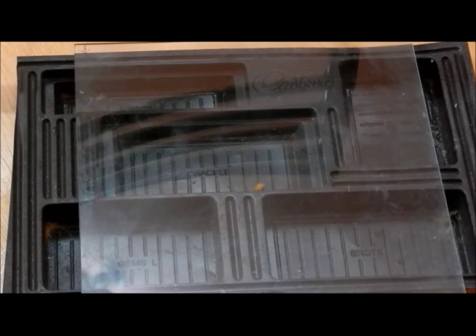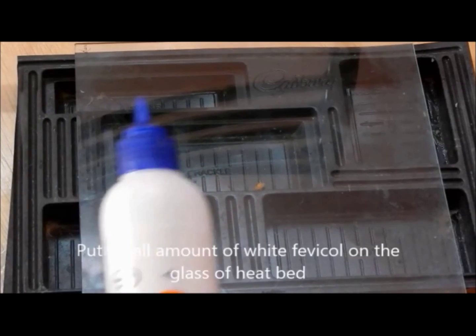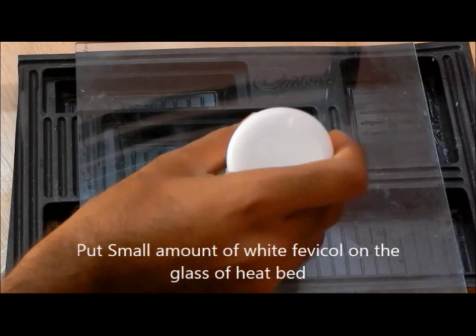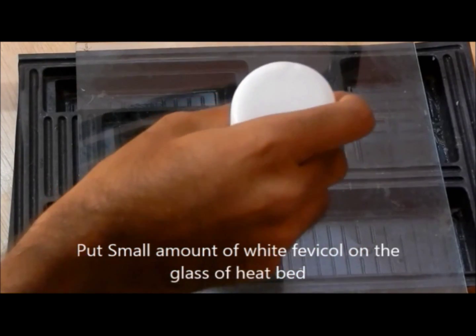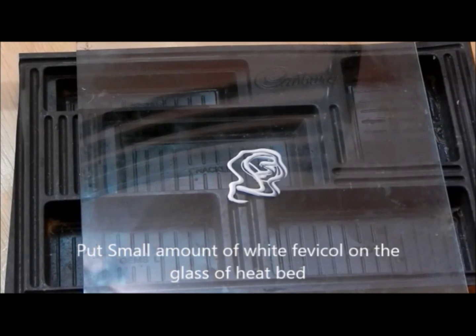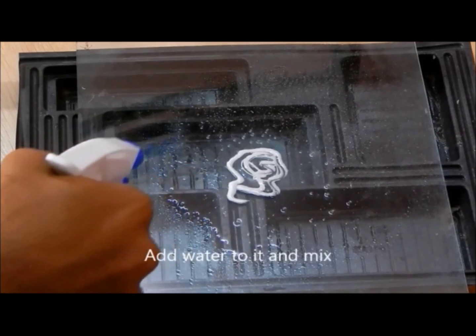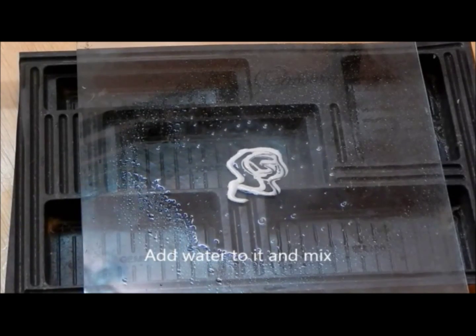You can use fevicol. Put a small amount of white fevicol on the glass of the heat bed. Then take some water and dilute the fevicol so that it spreads evenly on the surface of the glass plate. You can do it with your finger, a tweezer, or anything else.